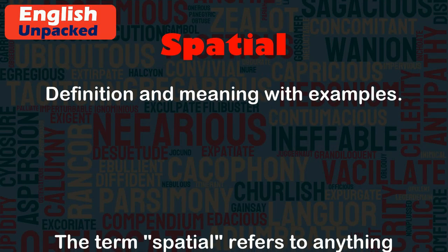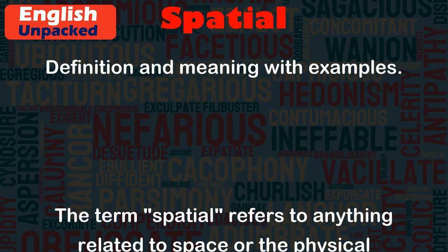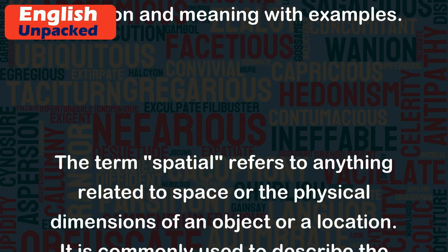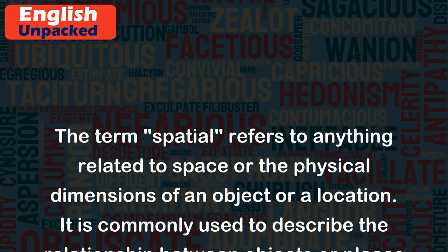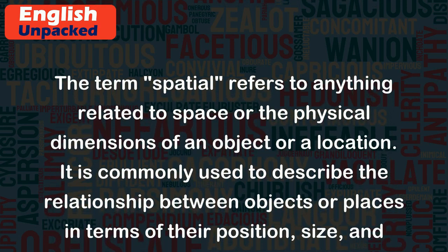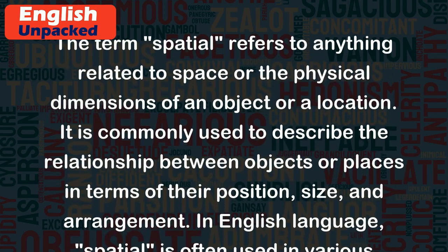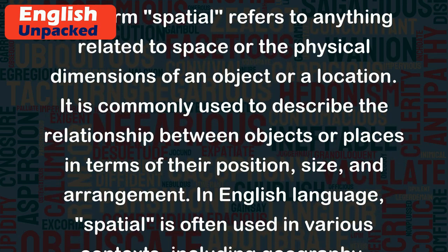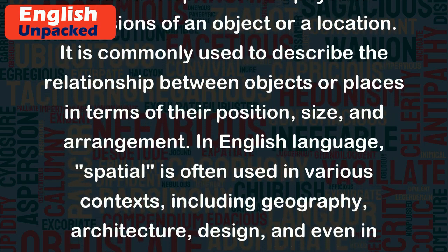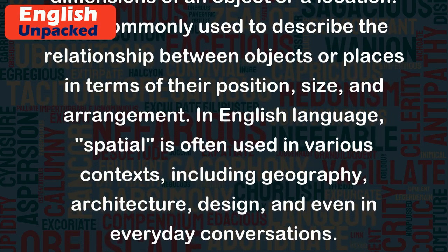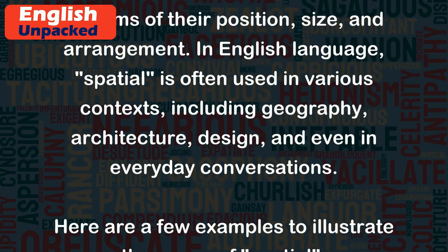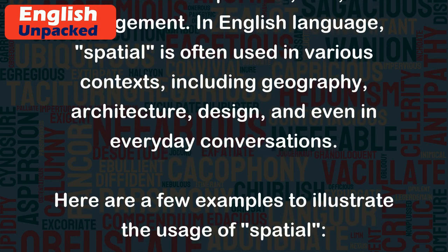Spatial. The term 'spatial' refers to anything related to space or the physical dimensions of an object or a location. It is commonly used to describe the relationship between objects or places in terms of their position, size, and arrangement. In English language, 'spatial' is often used in various contexts, including geography, architecture, design, and even in everyday conversations.